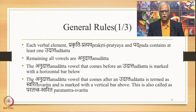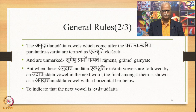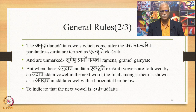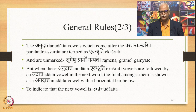Each verbal element — Prakriti, Pratyaya, or Pada — contains at least one Udhatta; remaining all vowels are Anudhatta. This is stated by the Paribhasa Sutra: Anudhatta Padam Ekavarjam. The Anudhatta vowel that comes before Udhatta is marked with a horizontal bar below. And the Anudhatta vowel that comes after Udhatta is termed Swarita and marked with a vertical bar above — this Swarita is also called Paratantra Swarita. The Anudhatta vowels which come after the Paratantra Swarita are termed Ekashruti and are unmarked.